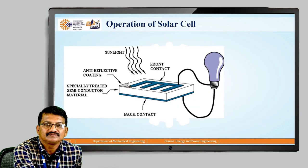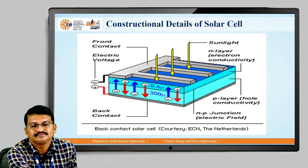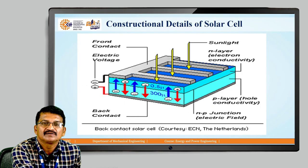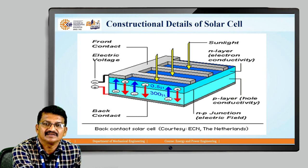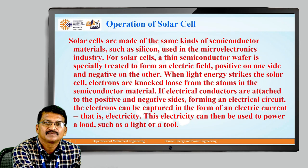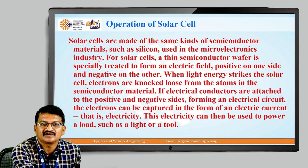You can see in the diagram that sunlight is coming onto the anti-reflective coating. This is the construction of the PV cell, in which sunlight is shown striking the n-type electron conductivity layer; the p-type layer is also shown, as is the n-p junction and the back contact. For a solar cell, a thin semiconductor wafer is specially treated to form an electric field — positive on one side and negative on the other.